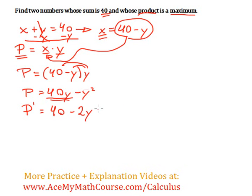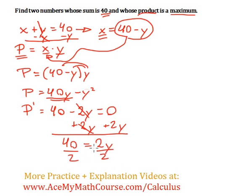Then what do we do? We set the derivative equal to zero and we solve for y. So I will add 2y to both sides of the equation. Bring down the 40. Zero plus 2y, 2y. Then I can divide both sides by 2. So y is 20.